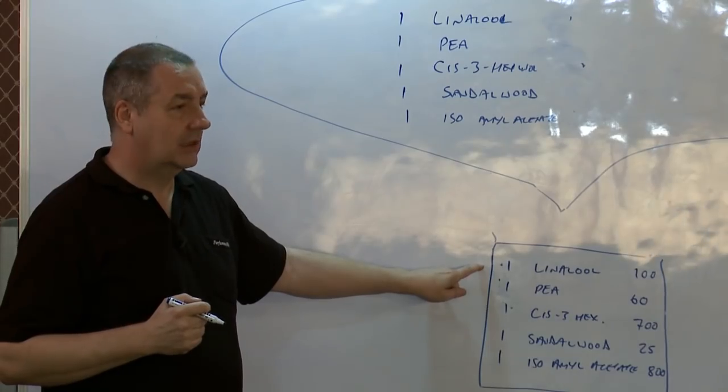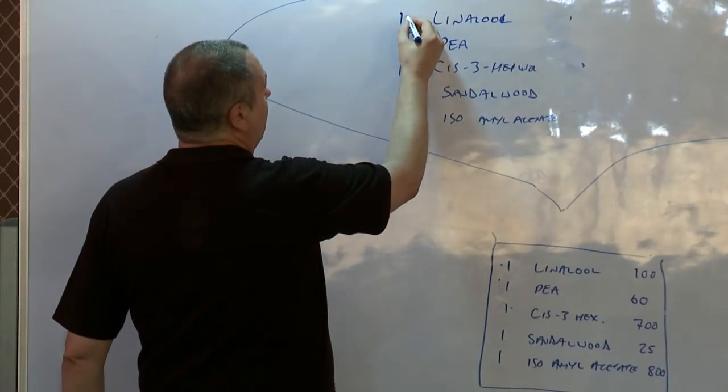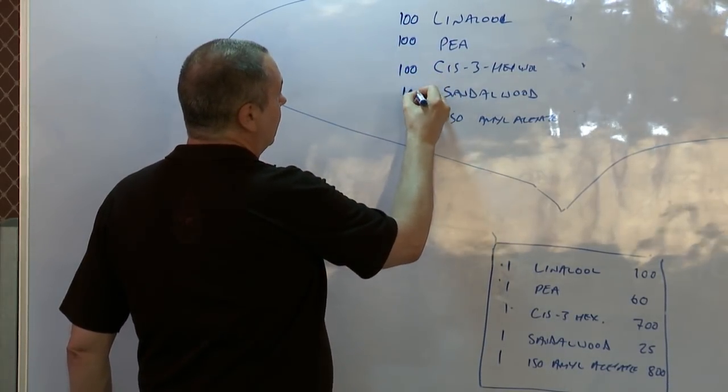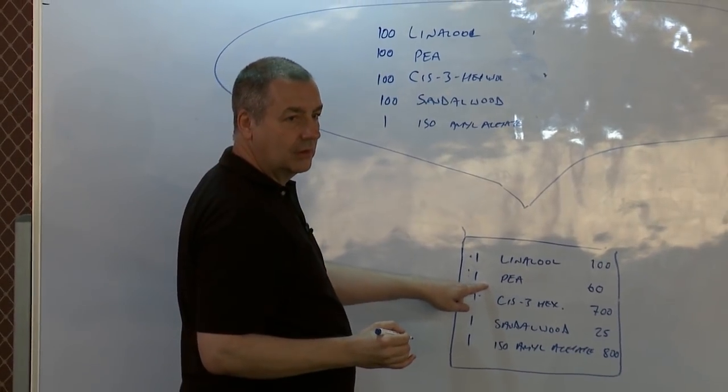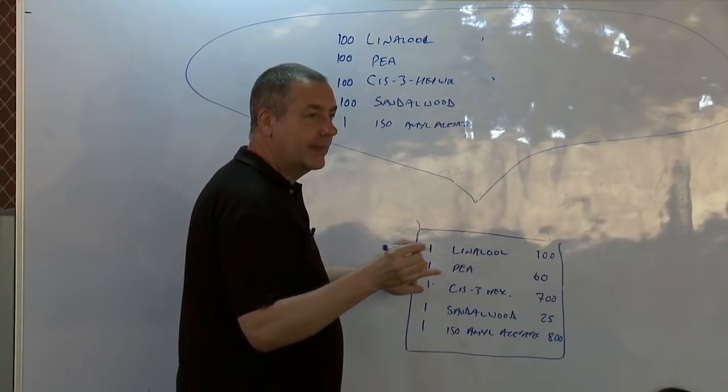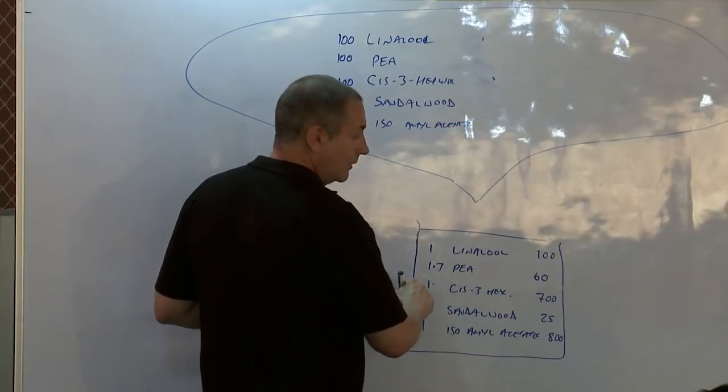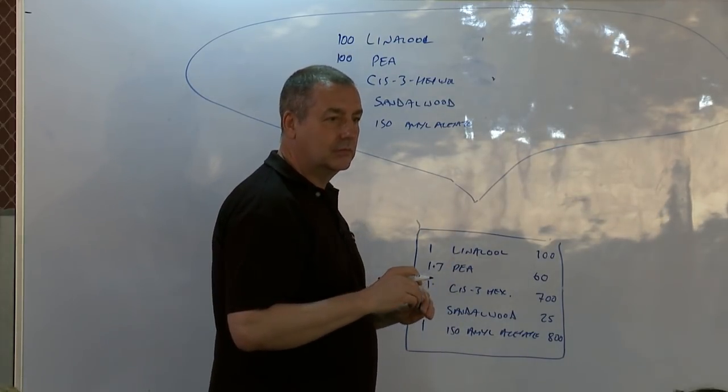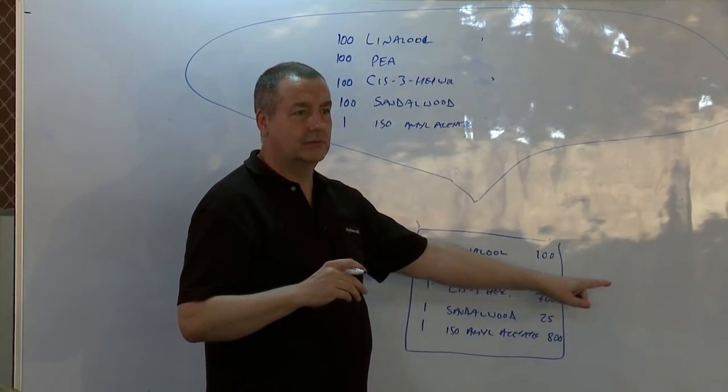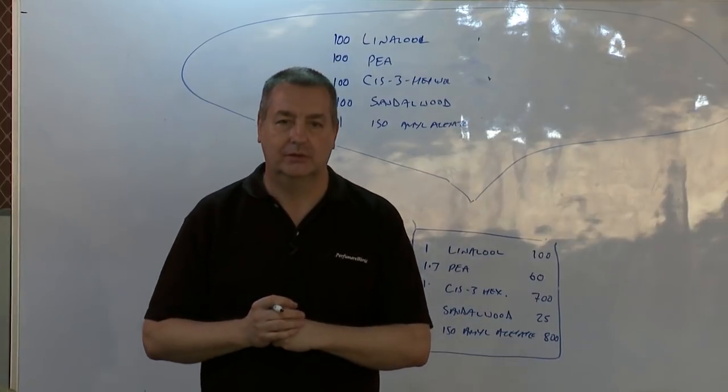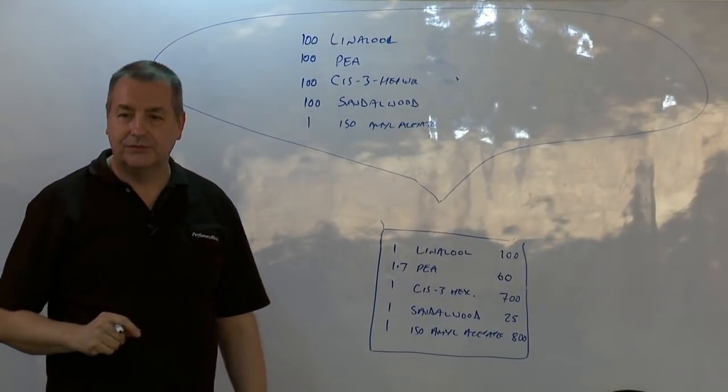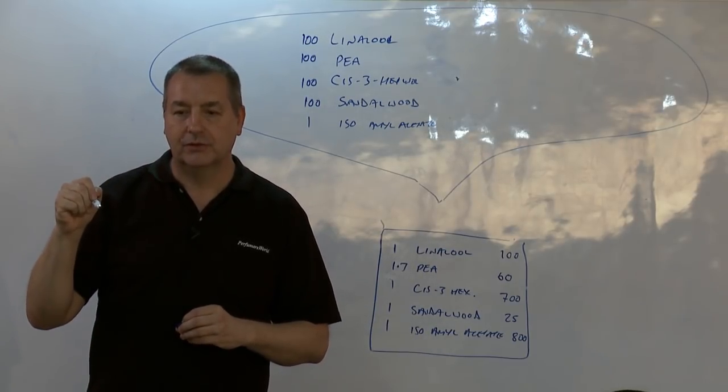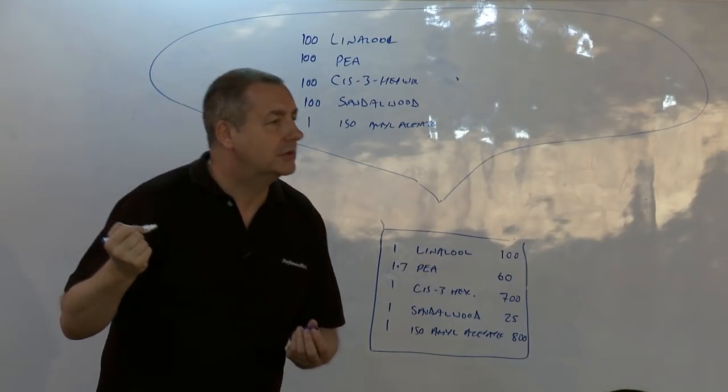Alter these quantities. I'll start with linalol as 100. So I'd put one of linalol to get 100. How much of PEA would I have to get to get 100? 1.7. About 1.7 times 60 is 102. How many would I need of cis-3-hexanol? 0.14. Thank you, mathematician.